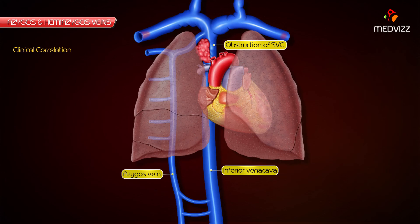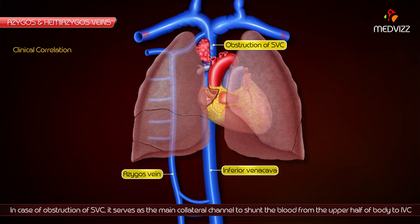Clinical Correlation. In a case of obstruction of the superior vena cava, the azygous vein serves as the main collateral channel to shunt the blood from the upper half of the body to the inferior vena cava.